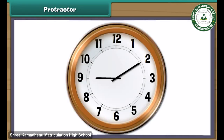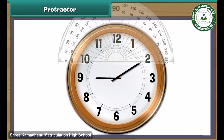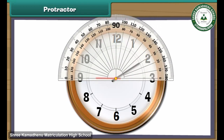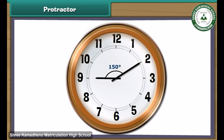The time is 10 past 9 by this clock — the long hand is on 2 and the short hand is on 9. Place the protractor on the short hand and read the outer marking on which the long hand rests. It is 150 degrees. Therefore, the time 10 past 9 makes an obtuse angle.